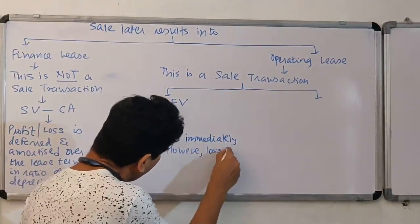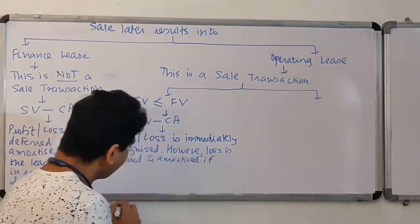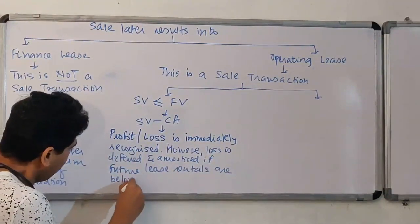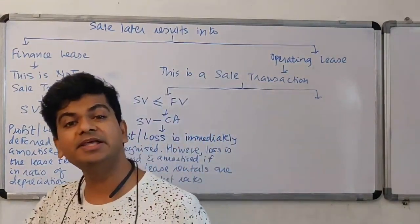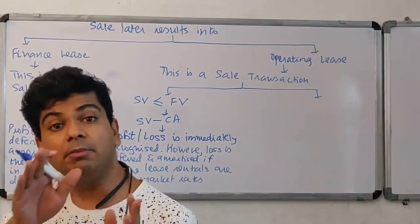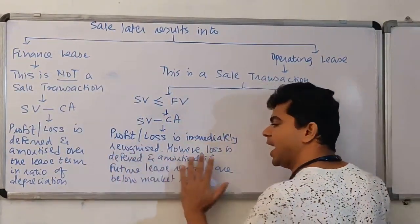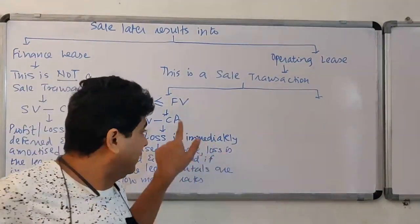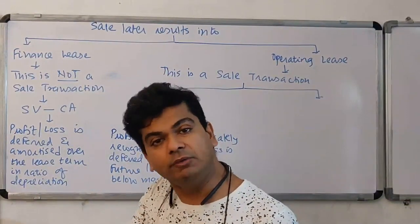Loss is deferred and amortized if future lease rentals are below market rates. For example, if normal market lease rent is 3,000 rupees but the lessor charges only 2,500 rupees because the seller had suffered a loss — that loss is being compensated by future lower lease rentals, so it should be deferred and amortized. Otherwise, both profit and loss will be immediately recognized in the P&L.